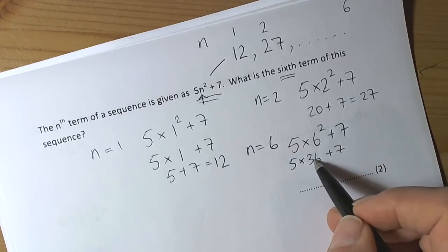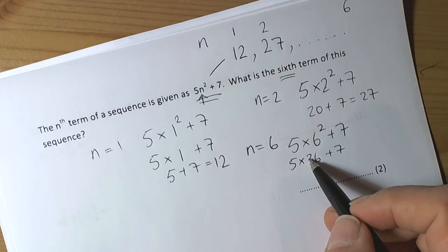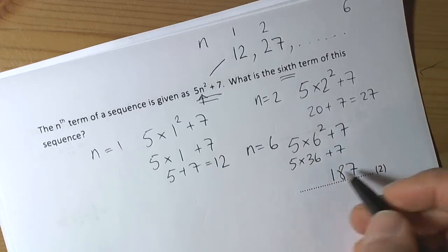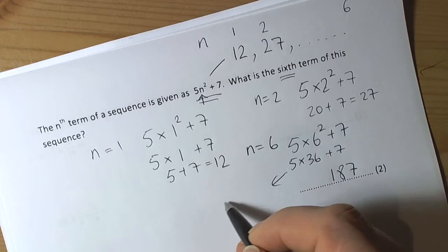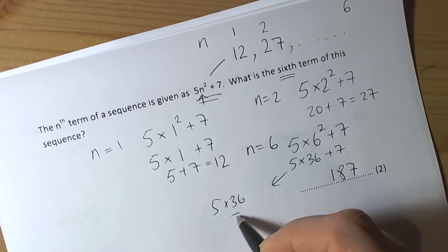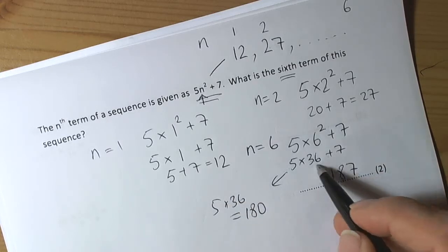Then we do the timesing, so 5 times 36 is 180, plus the 7 is 187. So the answer here will be 187. Just remember that 5 times 36 is 180, and then we're adding the 7 on.